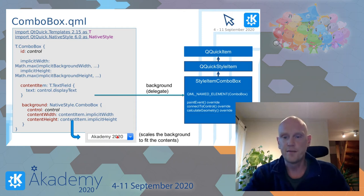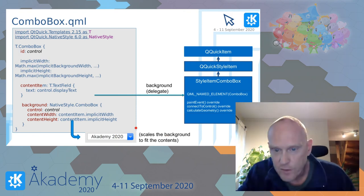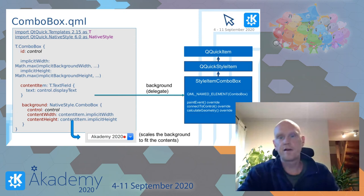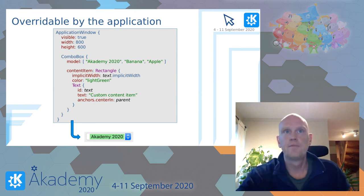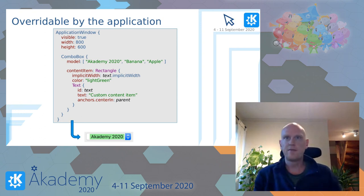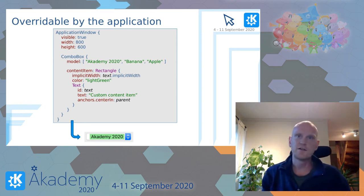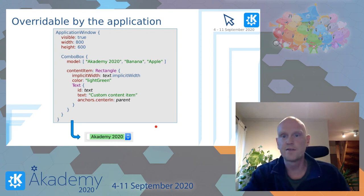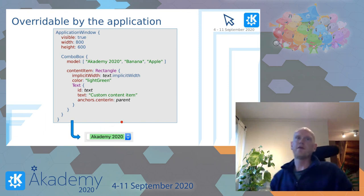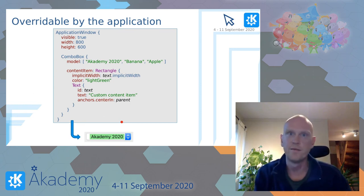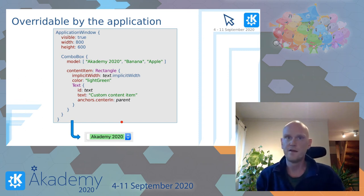And the result can be seen here at the bottom. Here we have a combo box with contents, with a scaled nine-patch background texture behind it, which looks like it should. By respecting the split between the foreground and background, the application is free to override any of the delegates, and this goes for all styles, not only the native ones. In the application shown here, we create a combo box and assign a custom content item with a green background. In general, we do recommend that you either set both a custom foreground and a custom background, or none of them. Otherwise, you'll risk an inconsistent look if your app is supposed to run on top of different platform styles.